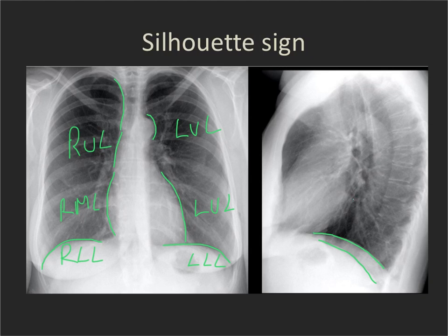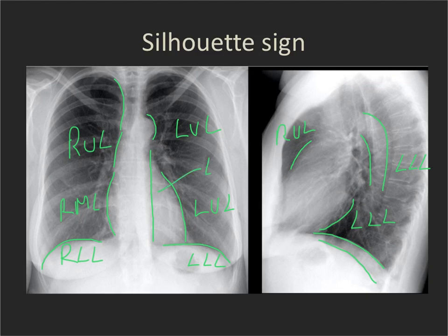On the lateral chest X-ray, loss of the posterior border of the heart indicates something going on in the left lower lobe. Loss of the ascending aorta indicates a right upper lobe process. Loss of the descending aorta again indicates a left lower lobe process — and that same left lower lobe process will also cause us to lose the para-aortic line on the frontal chest X-ray.